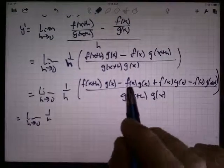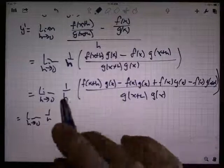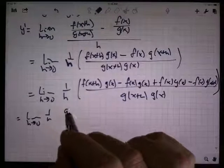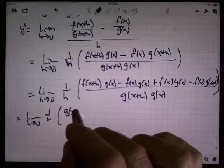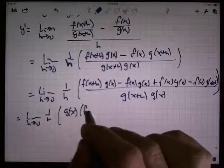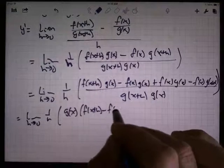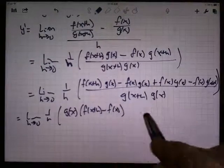I notice g of x can be factored out of this first part here. So I have g of x times f of x plus h minus f of x.